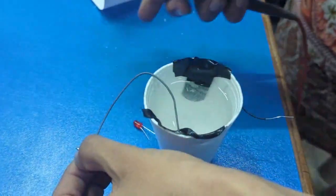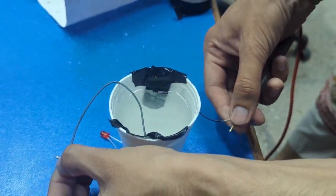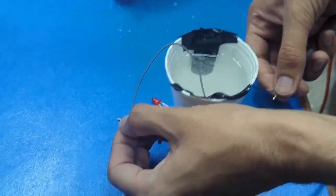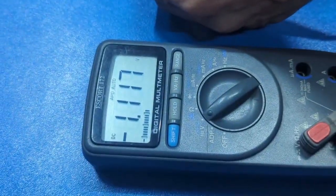Using a digital multimeter (DMM), we can observe a voltage of approximately 1.1 volts generated between the zinc and carbon electrodes.